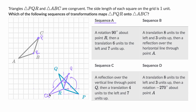And then point Q, if we go six units to the left and seven up, puts us right over there. So this looks like it worked — sequence A is good, it maps PQR onto ABC. This last one isn't an R, this is a Q right over here. So that worked — sequence A.